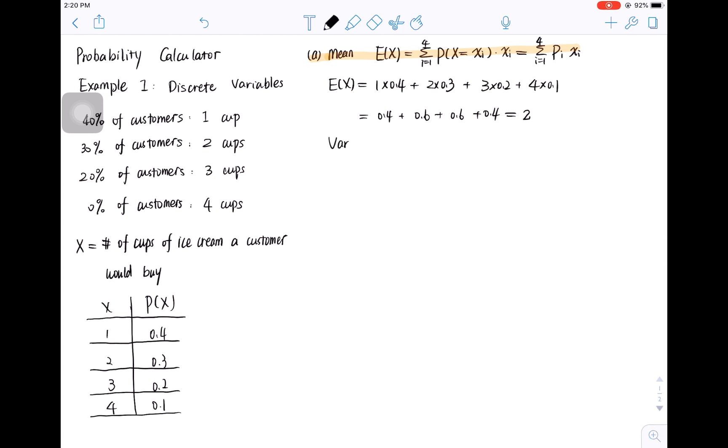For the variance, we will take the difference between each outcome and the mean, square the difference, and then multiply it by the probability of that outcome. So the first one is 1 minus 2 squared times 0.4. The second term is 2 minus 2 squared times 0.3. Similar for the rest two terms, the result is 1.